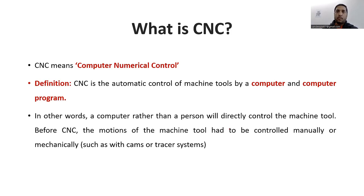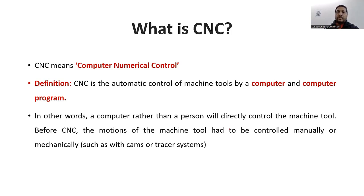CNC machining has also become common in low-volume job shops where batch sizes of a dozen to several hundred parts are typical. The decision between conventional and CNC machines is mainly driven by setup cost and volume. The setup cost for a conventional machine is low, while for CNC it is high. However, as production volume increases, productivity gains and the ability to spread setup cost over many parts makes CNC the obvious choice.